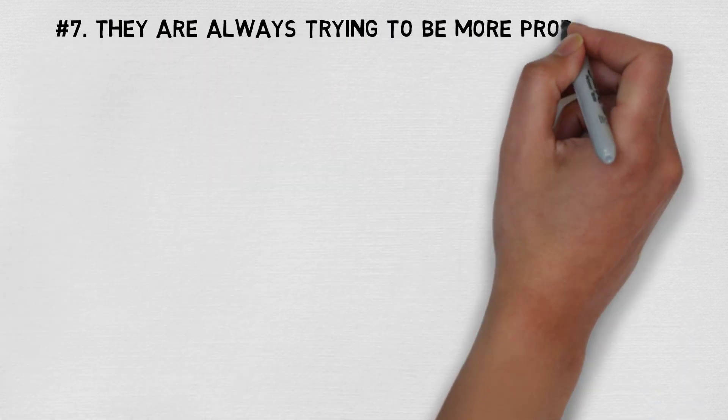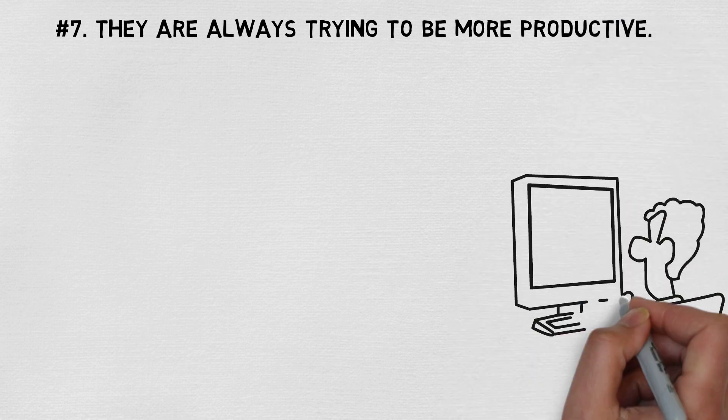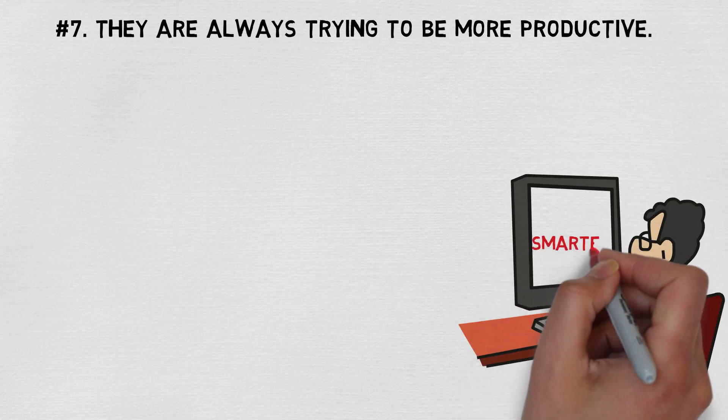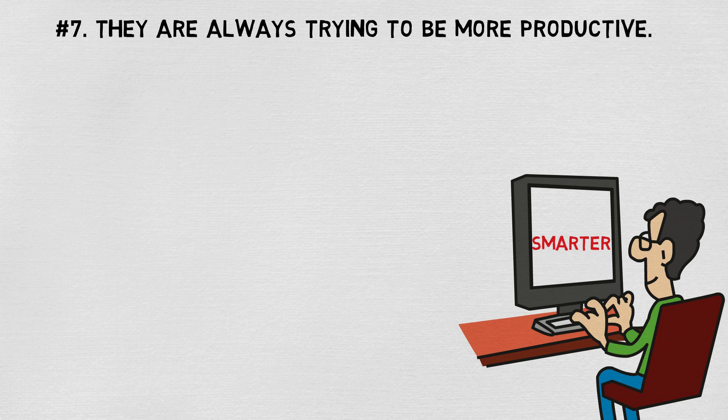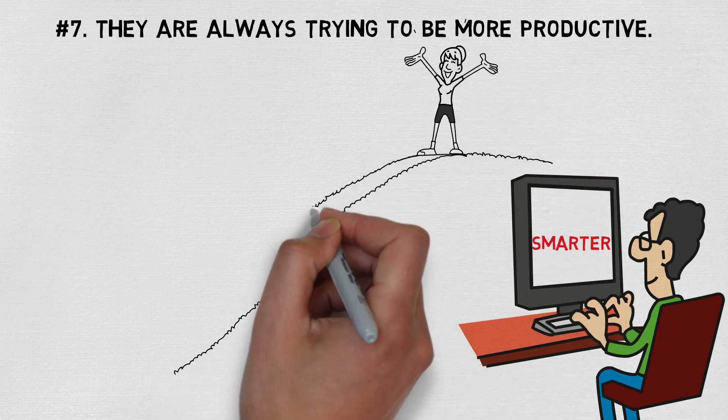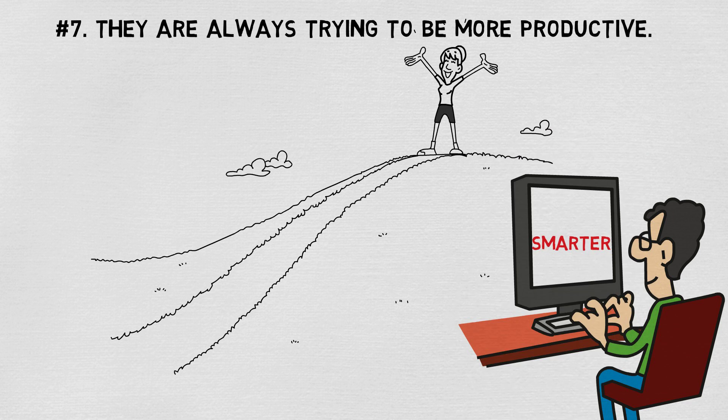Number seven, they are always trying to be more productive. Intelligent people don't work harder, they work smarter. Being efficient is not the same as overworking. They look to maximize productivity while minimizing effort where possible.